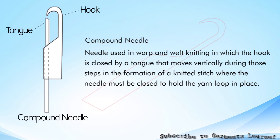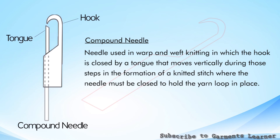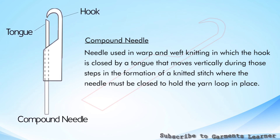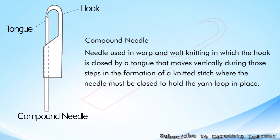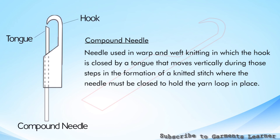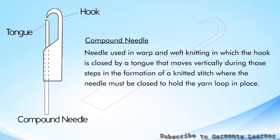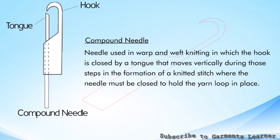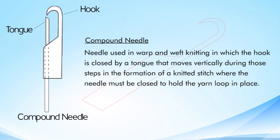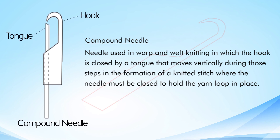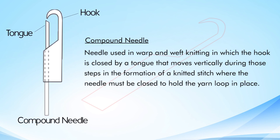The compound needle is used in warp and weft knitting, in which the hook is closed by a tongue that moves vertically during the steps in formation of a knitted stitch, where the needle must be closed to hold the yarn loop in place.